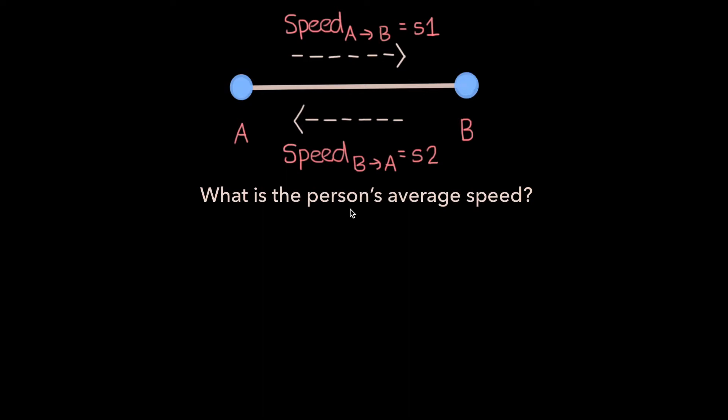In this video we will consider the following problem. If a person's speed while traveling from point A to point B is S1 and their speed when traveling from point B back to point A is S2, what is their average speed for the round trip?